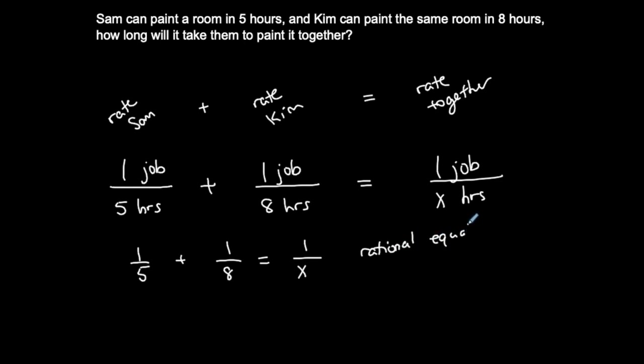And every time you guys are solving these work type of problems, Sammy can do this in this many hours. Whatever person can do this in this many hours. How long can they do it together? Or sometimes they tell you the amount of time that they do it together and maybe you have to find x here or x here. It doesn't matter, the setup is always the same. The rate at which one of them does it plus the rate at which the other one does it should be the rate at which they do it together, always.